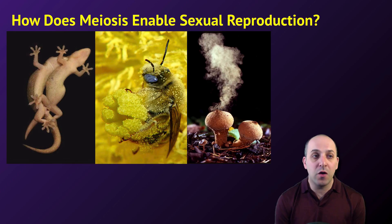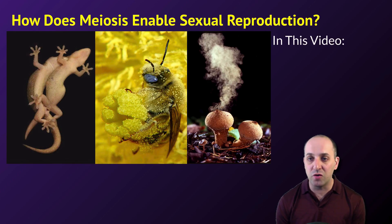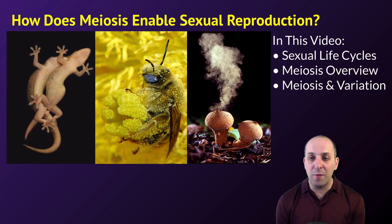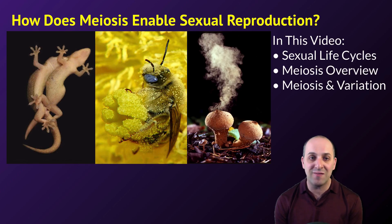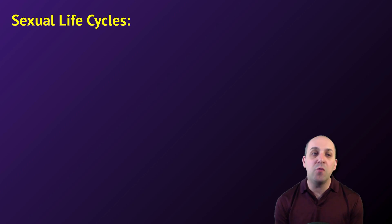The question we're going to look at in this video is: how does meiosis enable sexual reproduction? We're going to look at sexual life cycles, then we're going to look at an overview of meiosis, and then we're going to consider questions of how meiosis increases the amount of variation that we see in sexually reproducing organisms. Let's begin with a discussion of sexual life cycles.